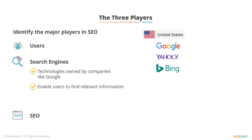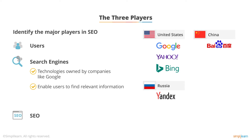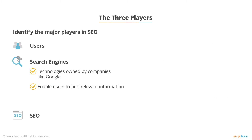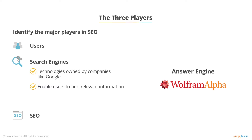Outside of the United States, there are some other very important search engines. First and foremost, we have Baidu, which is enormous in market share in China. You also have Yandex, which is gigantic in Russia, and Naver, which is important in South Korea. In addition to that, you have very specific search engines that do one thing very well — a great example being Wolfram Alpha, which works on computational knowledge and complex mathematics.